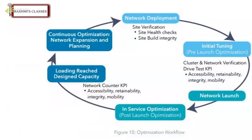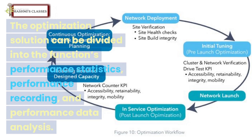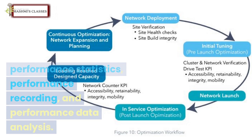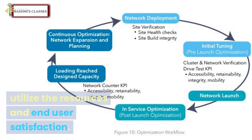Optimization is done in two phases: pre-launch and post-launch optimization, which is considered during network deployment. The optimization solution can be divided into the functions of performance statistics, performance recording, and performance data analysis. The end goal of optimization is to maximize the operator's return on investment, efficiently utilize resources, and ensure end-user satisfaction.